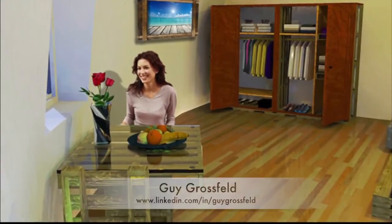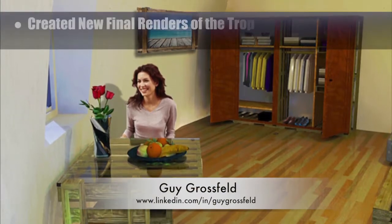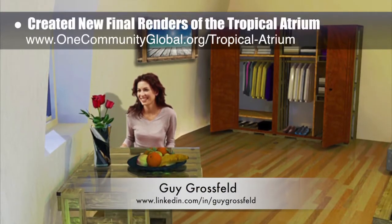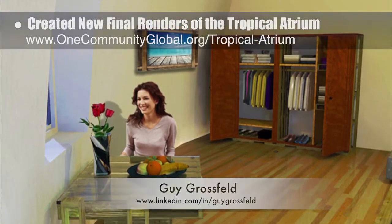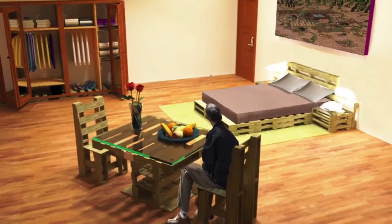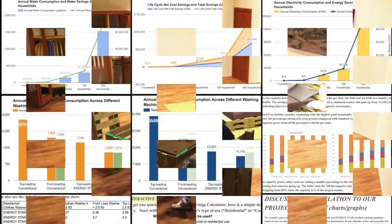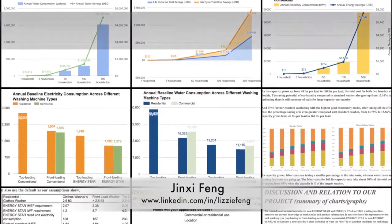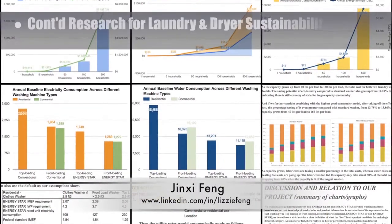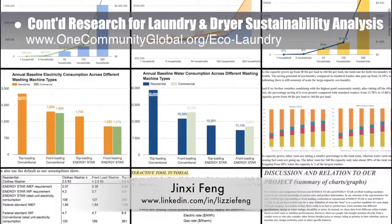In addition, Guy Grossfeld, graphic designer, helped us create this updated and final render of a person sitting by the window in one of the city center rental rooms, and this first-generation updated view of the rest of the room. Jinxi Feng, environmental consultant, continued her research helping us create an in-depth washing machine sustainability analysis.